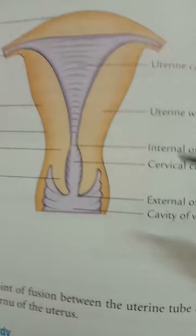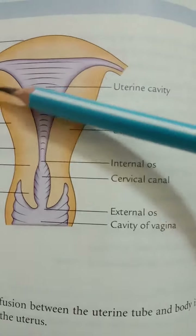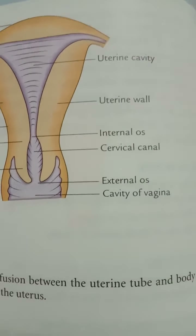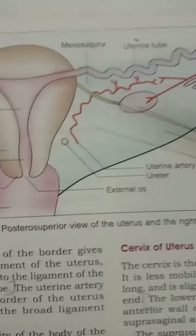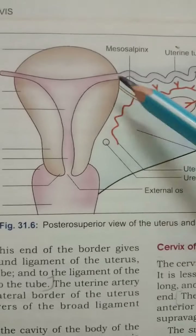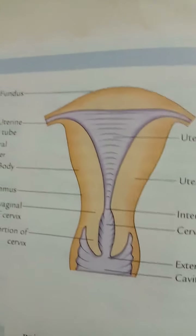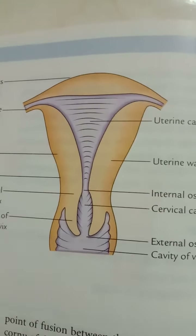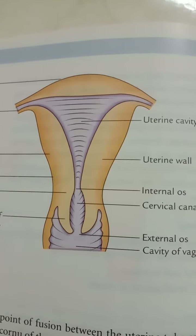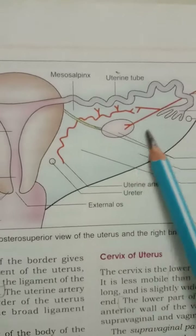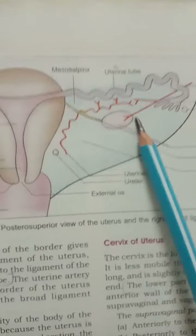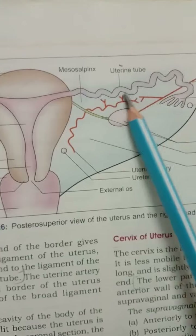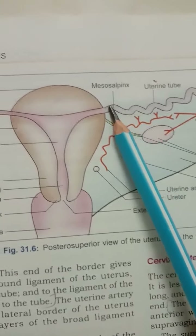The right and left lateral borders are rounded and related to the uterine artery on both sides. They are non-peritoneal and provide attachment for the broad ligament of the uterus. The uterine tube enters the uterus at the upper end of each lateral border. In the diagram, the broad ligament is shown in blue, and the uterine tubes enter on both sides at the upper border of the broad ligament.